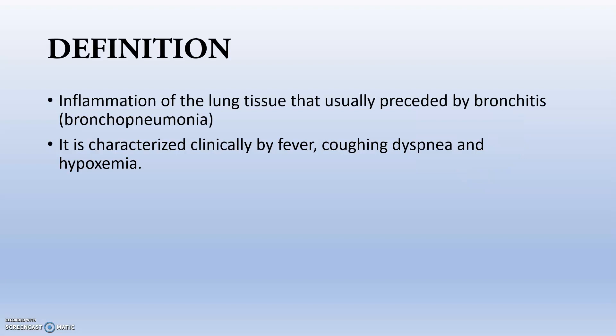Definition: Pneumonia is inflammation of the lung tissue that is usually preceded by bronchitis. First, the bronchus will be infected, then it leads to the alveoli and lung tissue. This is already termed as bronchopneumonia.